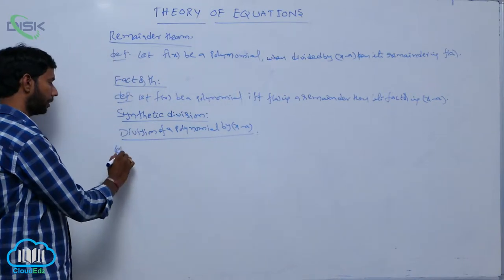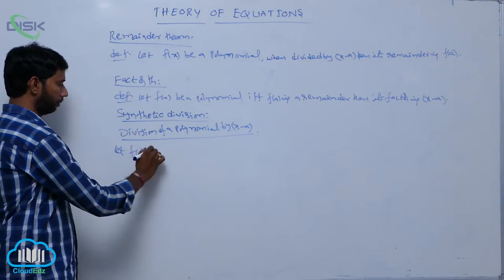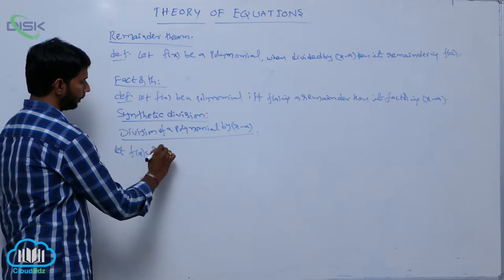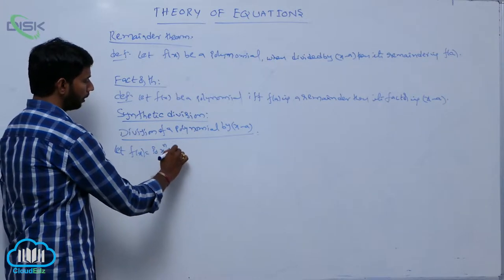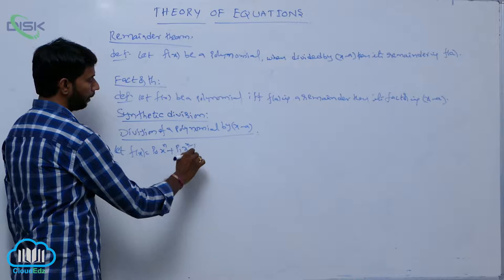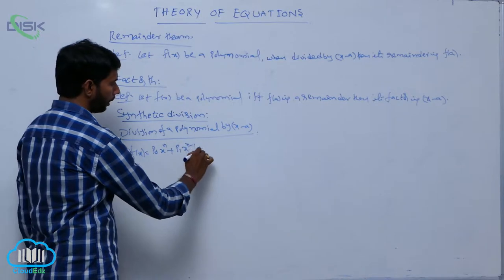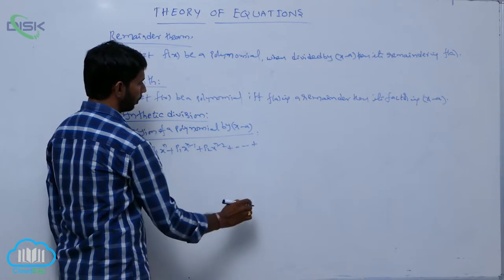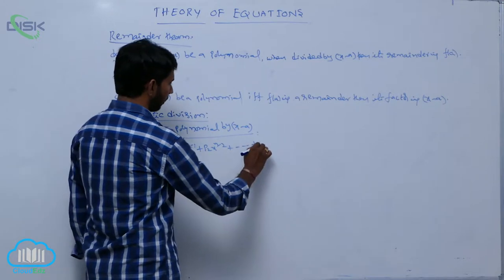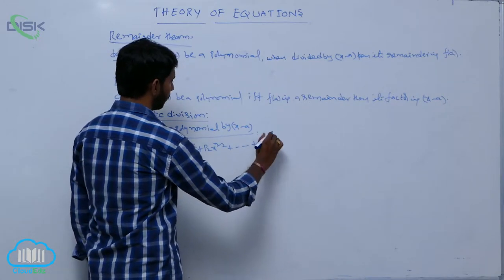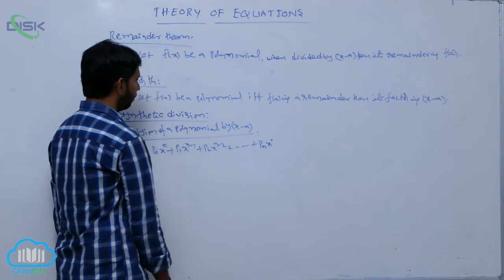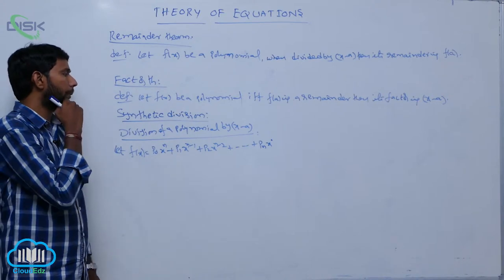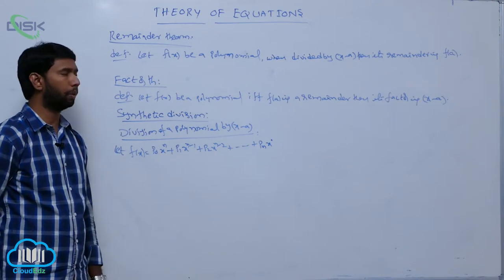Let f of x be equal to p naught into x power n, plus p 1 into x power n minus 1, plus p 2 into x power n minus 2, and so on, plus p n into x power 0.